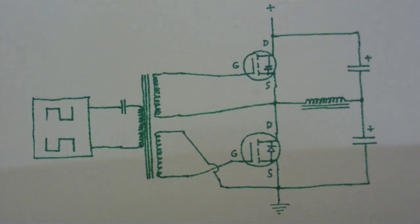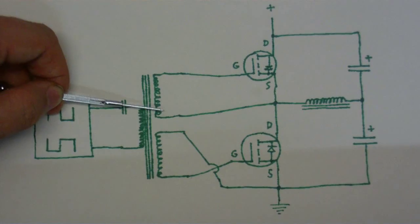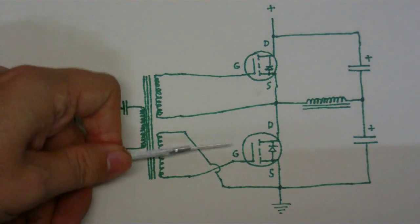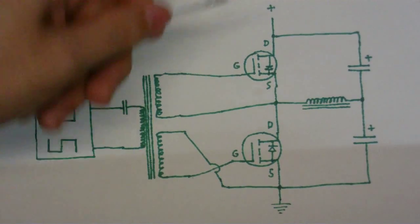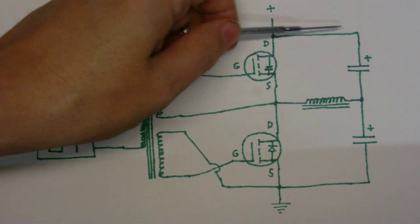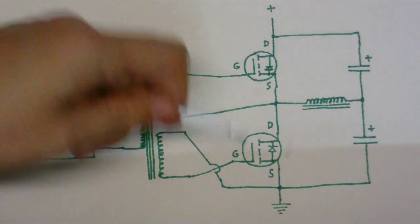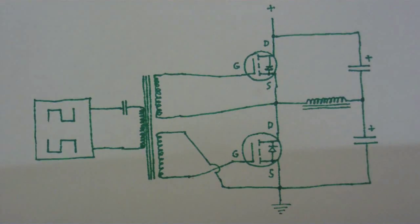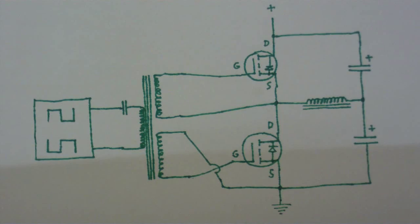And when the gate drive transformer gets pulsed the other way, the negative is on this side of the secondaries and the positive is on this side. So this gate gets charged positively and this gate gets charged negatively. So this one is on and this one is now off and the current goes in through this capacitor, then through the coil that way, then through the MOSFET and into the ground. So we end up with an AC waveform at that coil there and that's basically a half-bridge circuit.